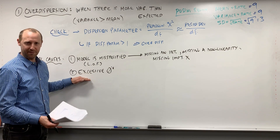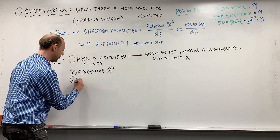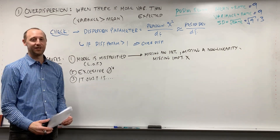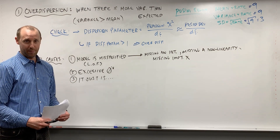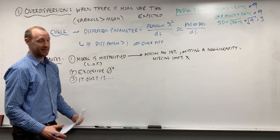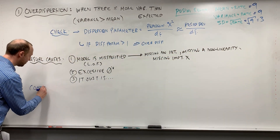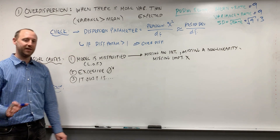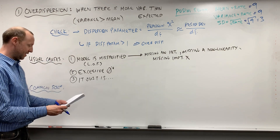The third cause is essentially that the Poisson distribution, which is the underlying probability distribution for Poisson regression, is just a theoretical distribution — it might simply not be a good fit in some cases. There may just be more variability than expected, or the variance may be larger than the mean. For the most common solution, I'll mention one main approach, noting that other approaches exist and are covered in the course notes.